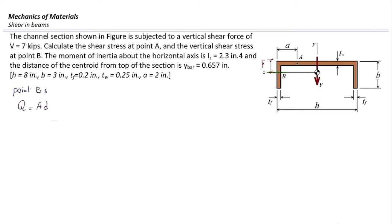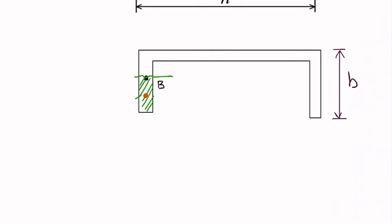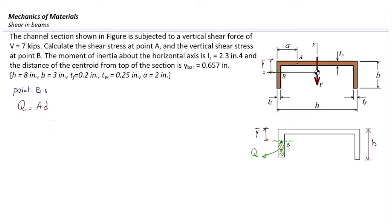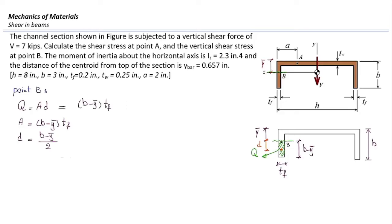For determining Q, we know Q equals A multiplied by D. I cut point B horizontally to free that leg. The area cut has height B minus Y-bar and thickness TF, so area equals (B minus Y-bar) times TF. D is the distance from the centroid of that hatched shape to the centroid of the entire section, which is (B minus Y-bar) over 2. Plugging in the numbers gives Q equal to 0.55 inch cubed.